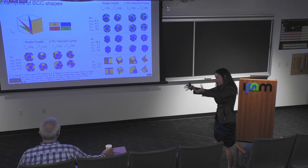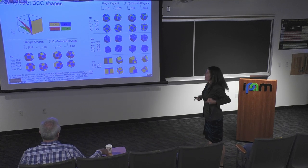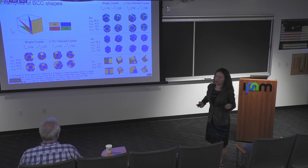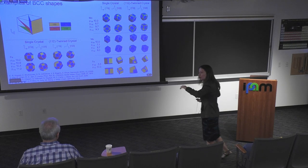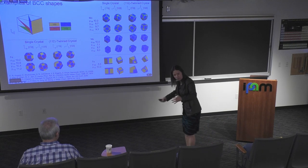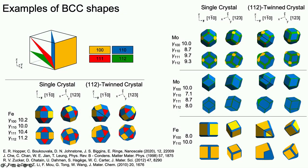So we decided: imagine we twin in BCC. If you twin there, you're going to twin along the {101} plane of BCC — this is the low index plane, this is what twins in the bulk. We took known surface energies, reproduced known single crystal shapes, and then asked ourselves: given these surface energies, what kind of twin shapes would we get and how would we determine that they exist?